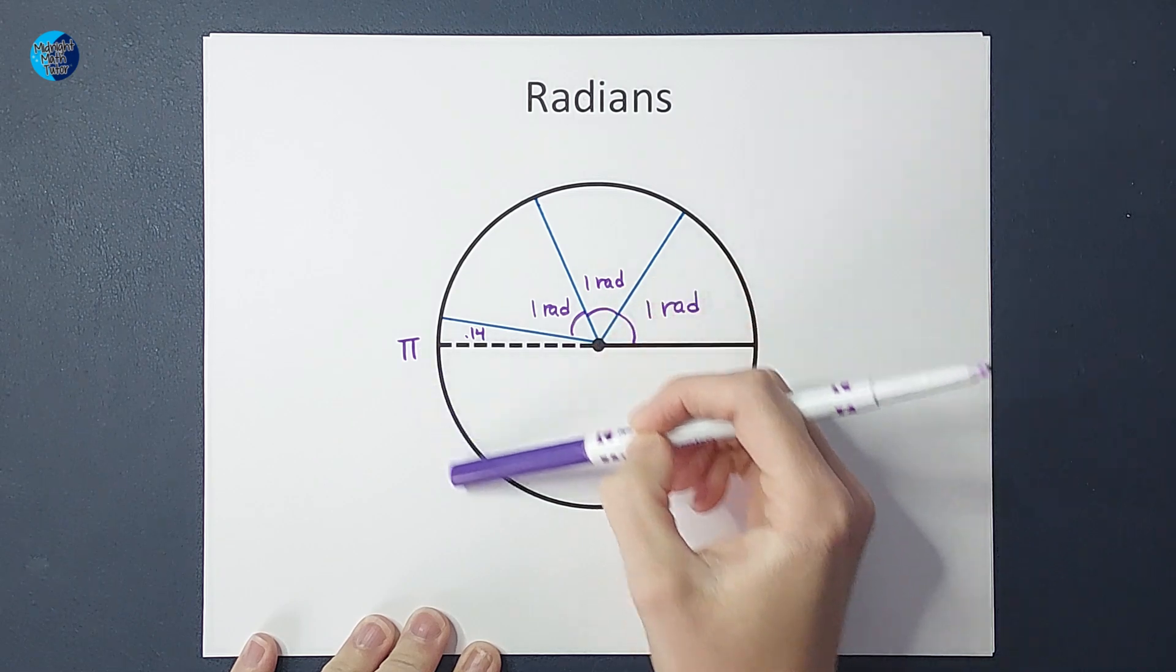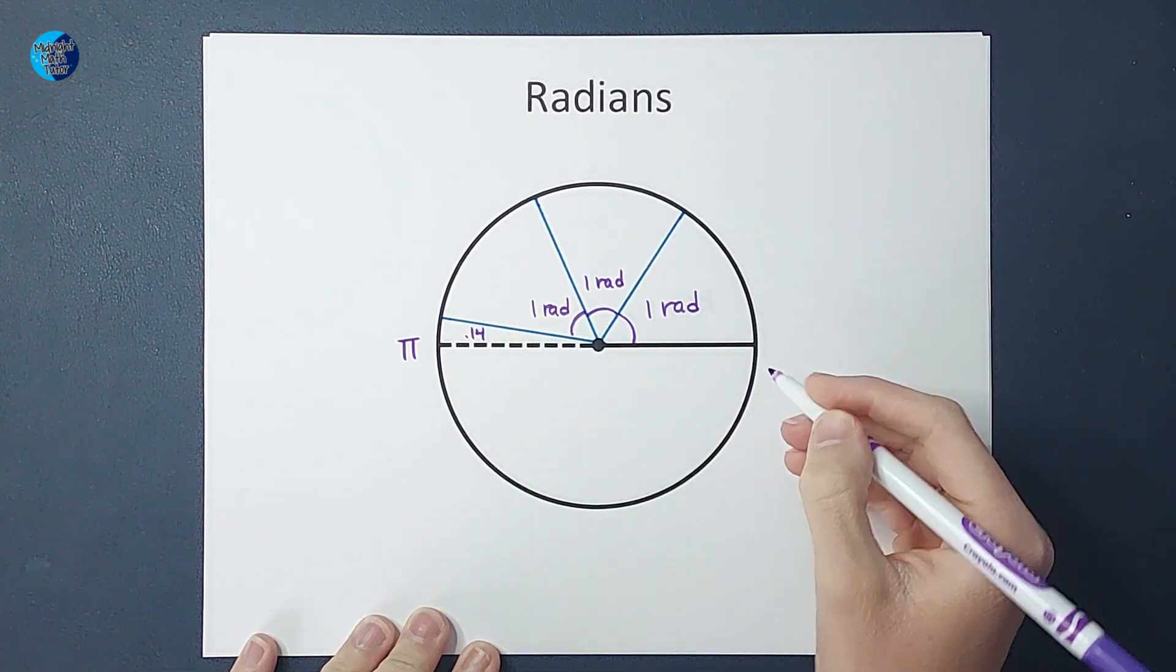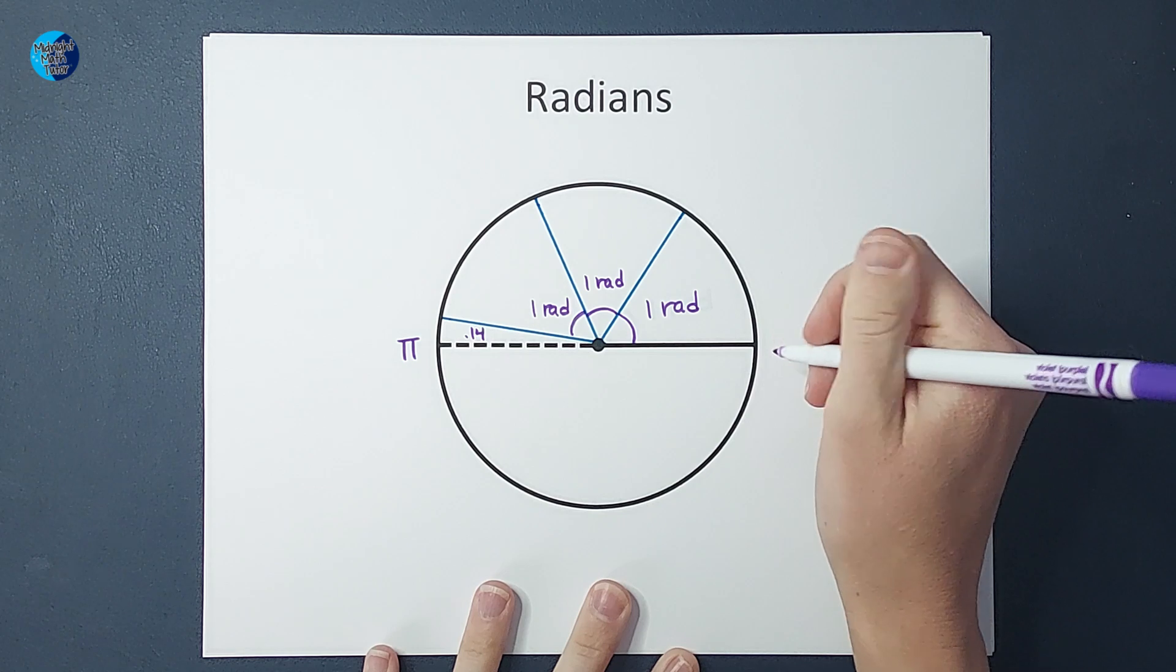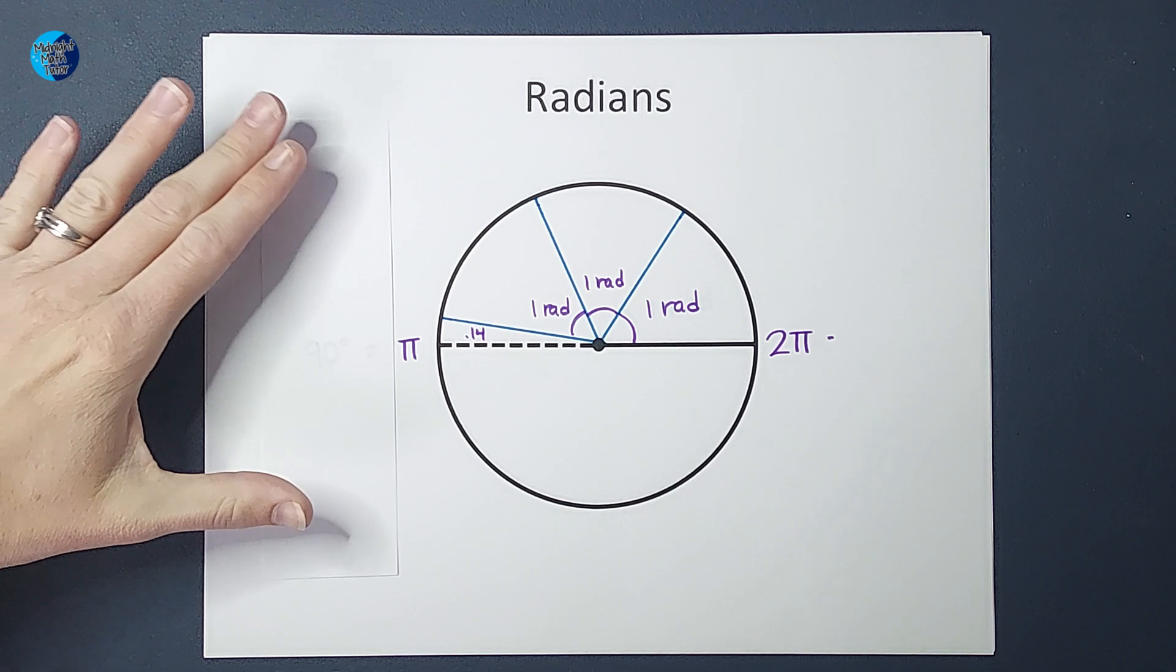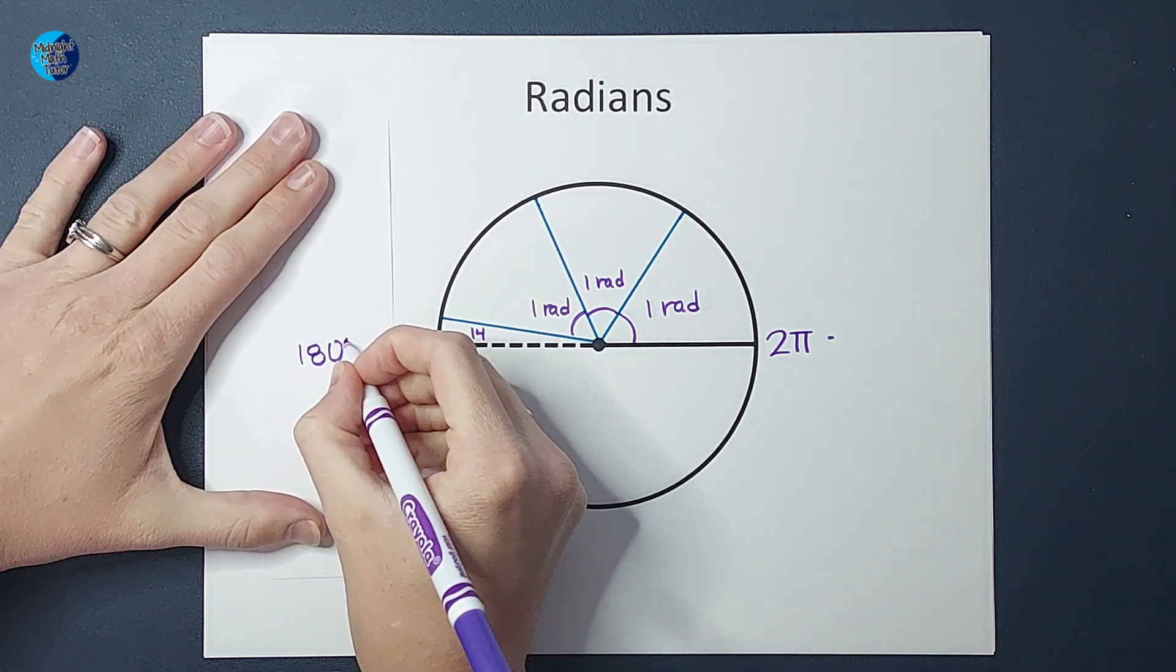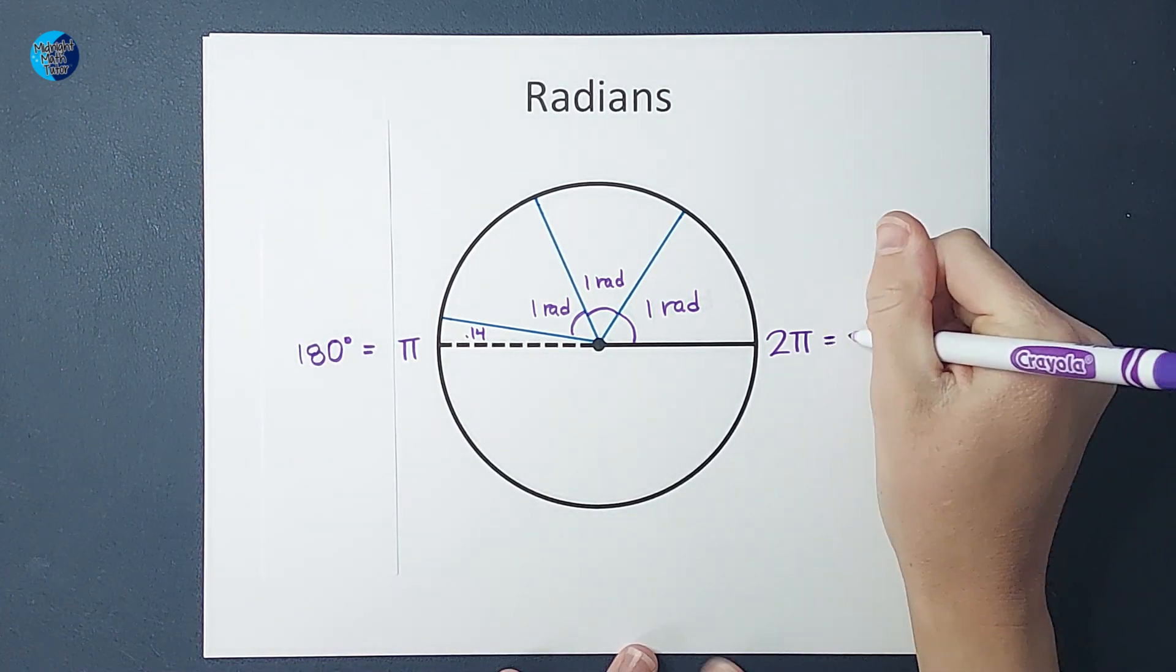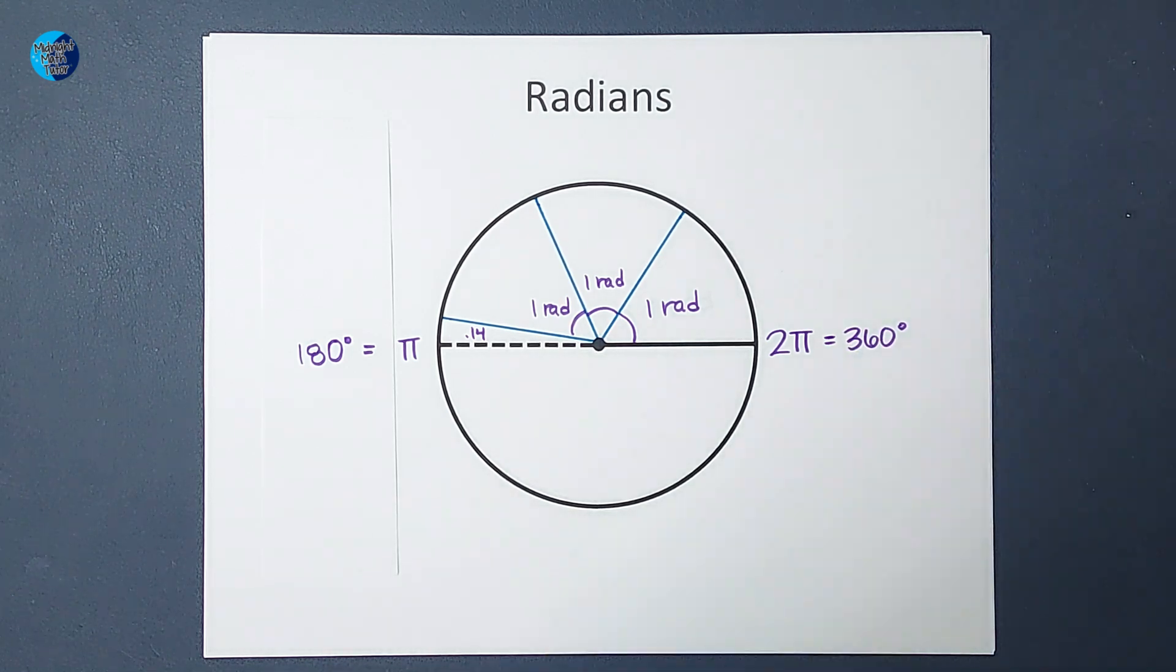Now, if I were to continue doing these radian measures, guess what? Over here, I would end up with 6.283185, it would keep going, or 2π. So, 180 degrees is equal to π radians and 2π radians is equal to 360 degrees. That is where these come from.